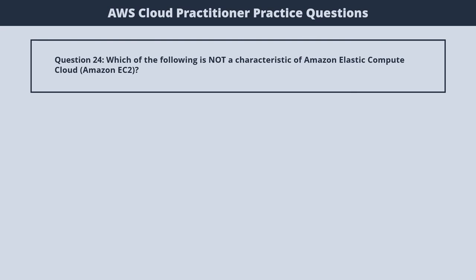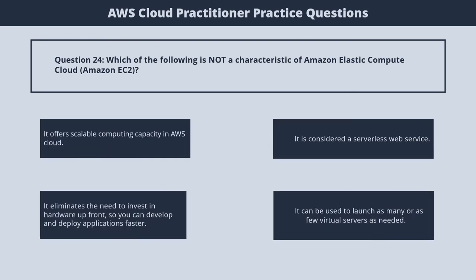Question 24. Which of the following is not a characteristic of Amazon Elastic Compute Cloud? 1. It offers scalable computing capacity in the AWS cloud. 2. It is considered a serverless web service. 3. It eliminates the need to invest in hardware upfront, so you can develop and deploy applications faster. 4. It can be used to launch as many or as few virtual servers as needed. The correct answer is 2. It is considered a serverless web service.